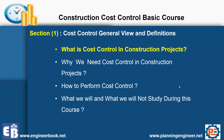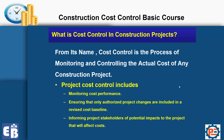So what is cost control in construction projects? Cost control is the process of monitoring and controlling the actual cost of any construction project. Project cost control includes monitoring the cost performance, ensuring that only authorized project changes are included in the revised cost baseline, and informing project stakeholders of potential impacts to the project that will affect costs. This is the theoretical definition of cost control from my point of view.